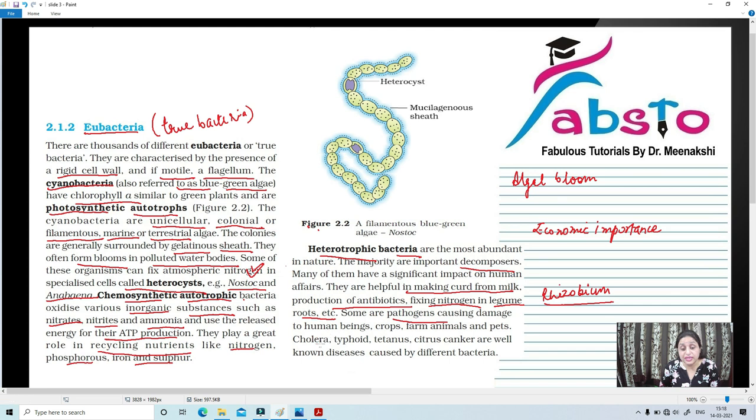Again, some of the bacteria also cause diseases like cholera which is caused by Vibrio cholerae, typhoid caused by Salmonella typhi, tetanus, citrus canker as well as other diseases caused by different bacteria. So, the economic importance we have studied here. The economic importance of archaebacteria, cyanobacteria and heterotrophic bacteria, how are they important to us? They are helpful also and they are notorious also. They are a major cause of different diseases that we see in human beings as well as animals and plants.